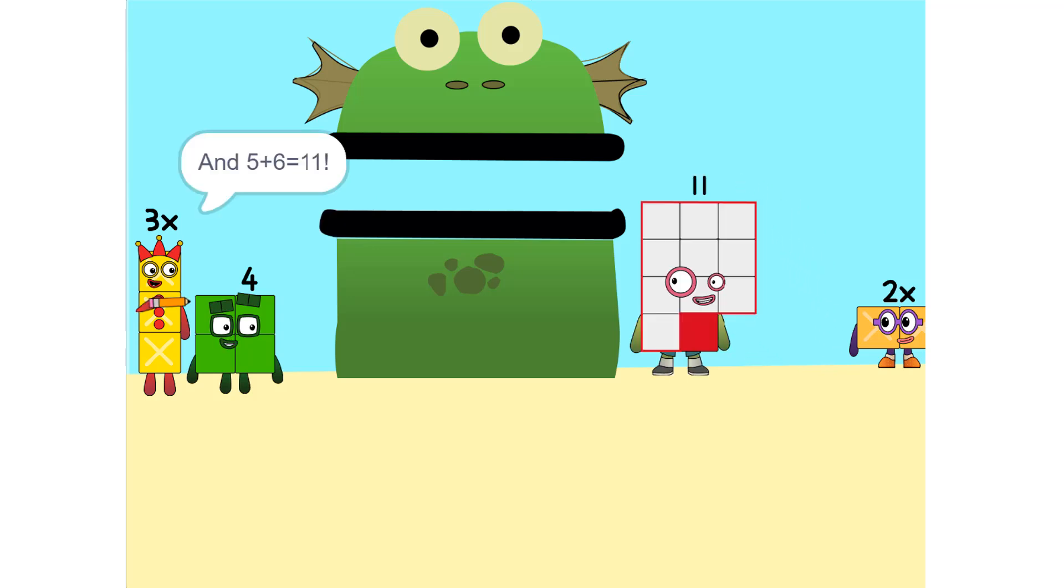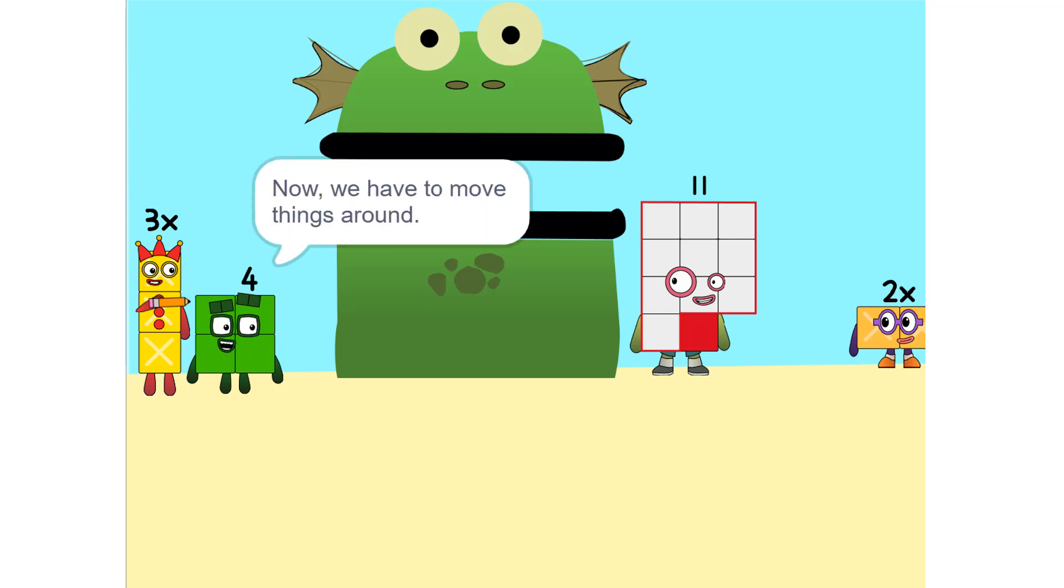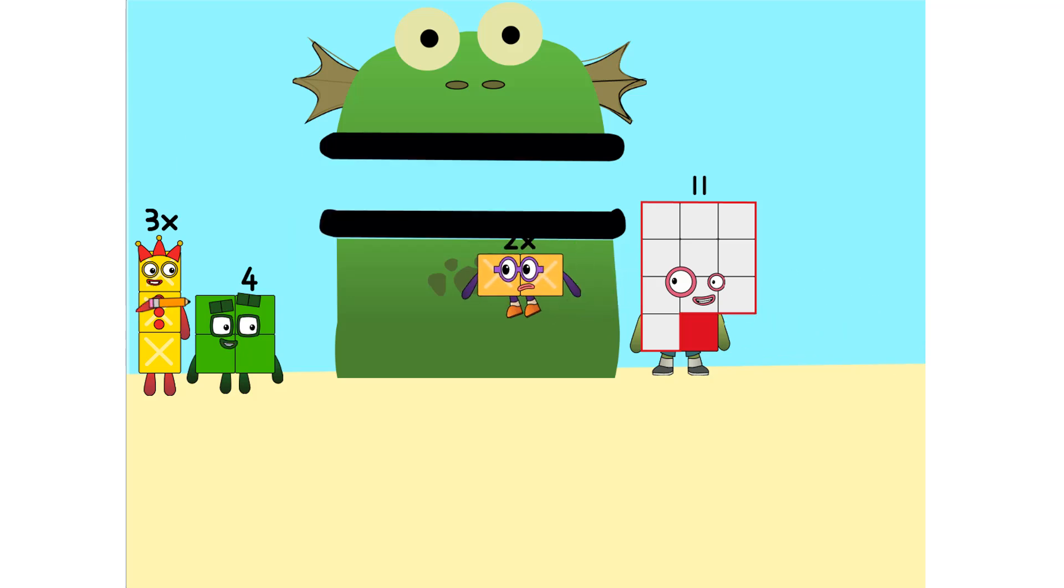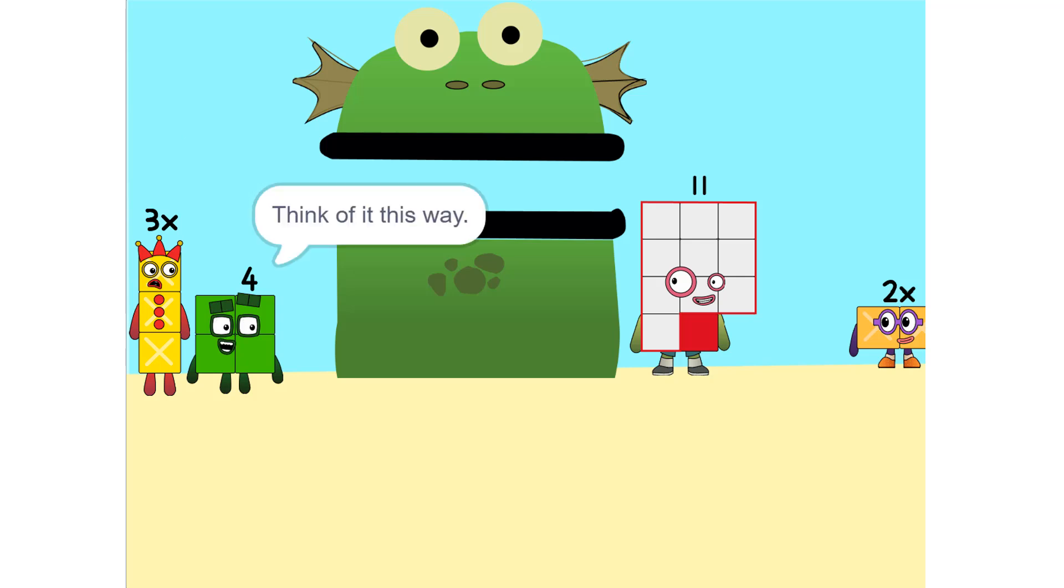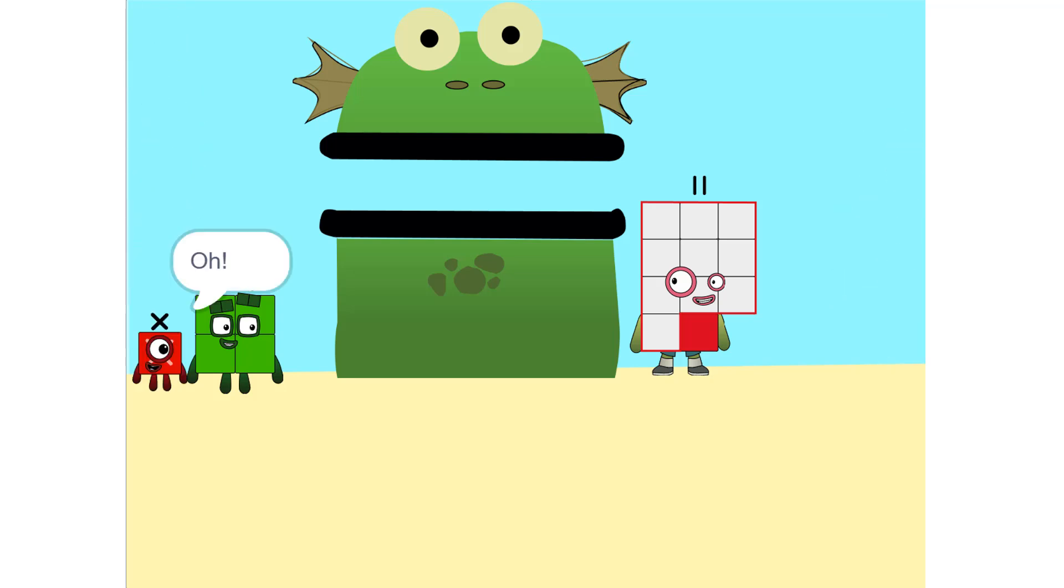And 5 plus 6 is 11. Yeah. Now we have to move things around. We have to move this 2X to this side. So 5X? Whenever you switch sides, you have to switch its sign. So if it's positive, it becomes negative and vice versa. Why? Think of it this way, you're subtracting 2X from each side. So it'd just be 1X or X. Correct.